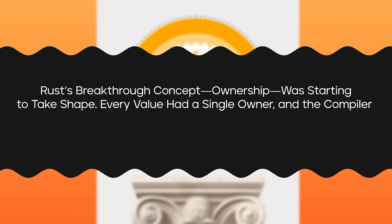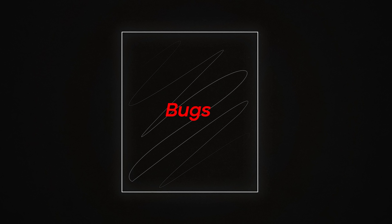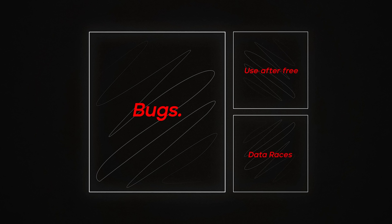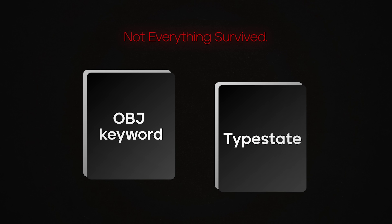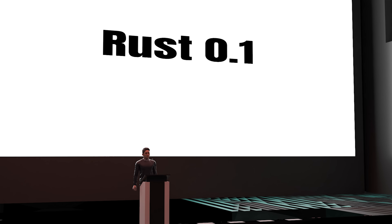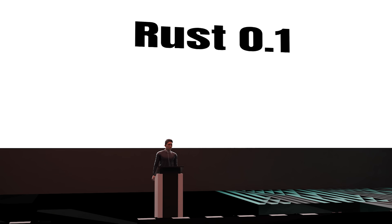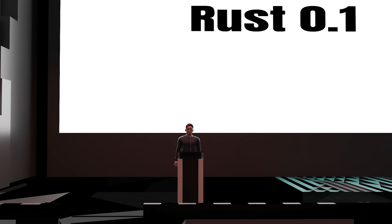Every value had a single owner, and the compiler enforced clear rules for borrowing and moving memory. That meant entire categories of bugs — like use-after-free or data races — could be caught at compile time. Not everything survived: the objd keyword for objects was gone, type state was removed. Rust was shedding features that didn't serve its core goals. By January 2012, Rust 0.1 was released. For the first time, the world could try it — rough around the edges, but promising. A community was forming.